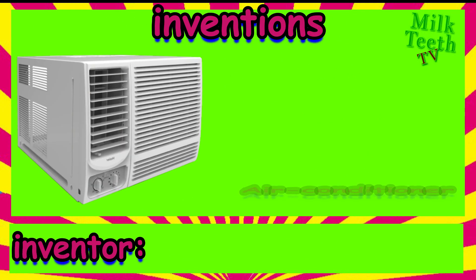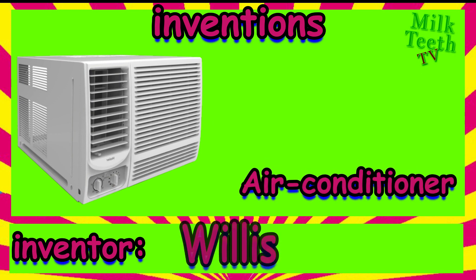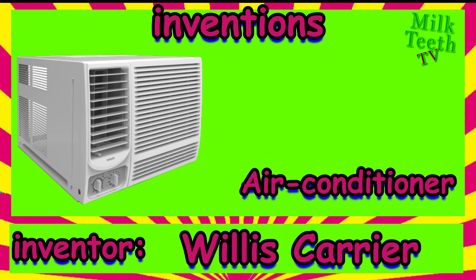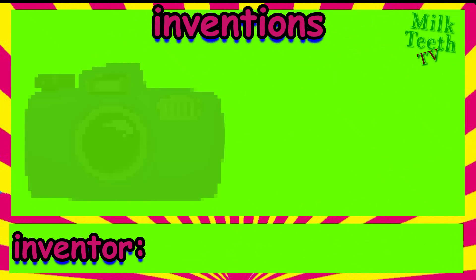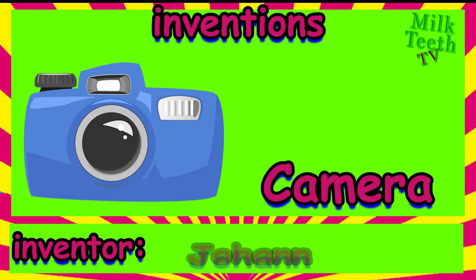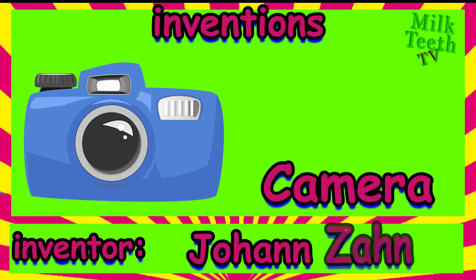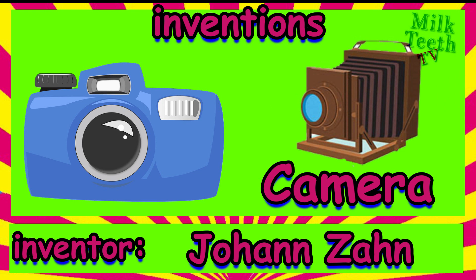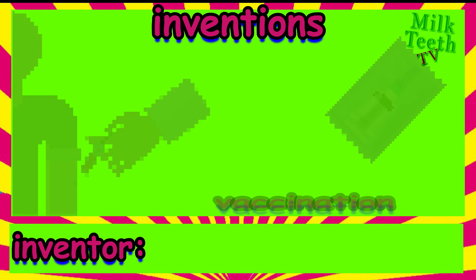The air conditioner was invented by Willis Carrier. Do you love to click pictures? This is a camera. It was invented by Johan Zahn. Let's see how the camera looked way back when it was invented compared to now.